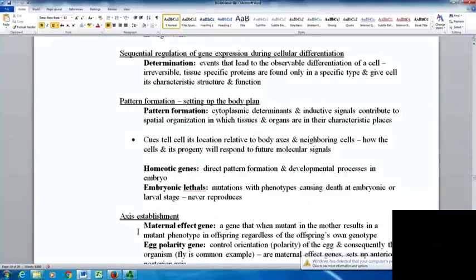Homeotic genes direct pattern formation and developmental processes in the embryo. Some are considered embryonic lethals, where mutations with phenotypes too severe to survive cause death at the embryonic or larval stage—these individuals never reproduce. Basically, the cell looks at it and says this is not going to work, there's nothing we can do to fix it, we're going to scrap it.